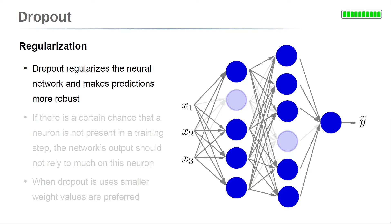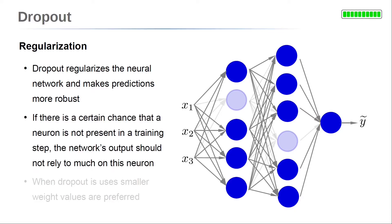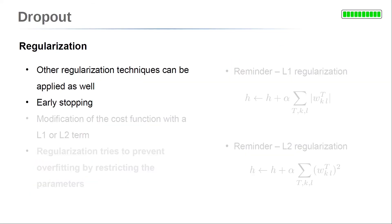The dropout technique regularizes the neural network and makes its predictions more robust. If there is a certain chance that a neuron is not present in the training step, the network's output should not rely too much on a specific neuron. In other words, the output should not be too sensitive to a specific neuron and its weights. Therefore, dropout prefers smaller weight values and more equally distributed responsibilities for the output values. The effect seems similar to the regularization techniques discussed in the regularization section.